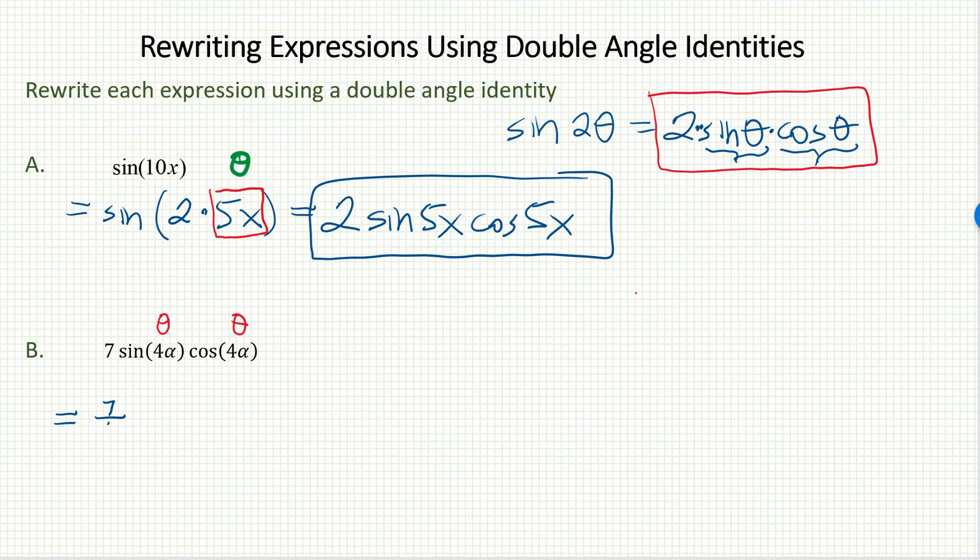If I multiply 7 halves by 2, that's just 7. The 2's would cancel. I haven't changed anything. I've simply rewritten this so that now it is an exact match of the right side of that double angle identity. 7 halves times 2 sine θ cosine θ.